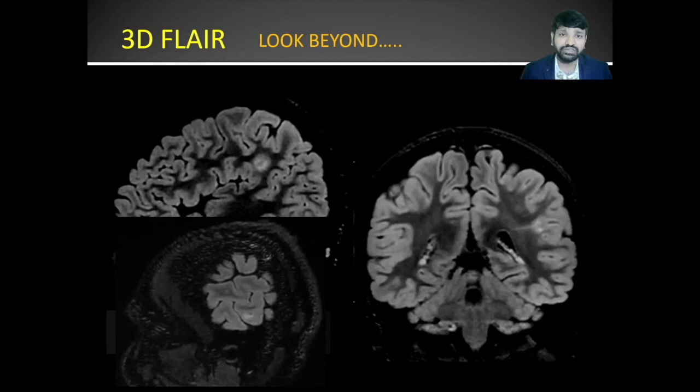Make use of 3D FLAIR to look beyond the brain parenchyma — that is, at the orbits, paranasal sinuses, neck spaces, and the cervical spine.